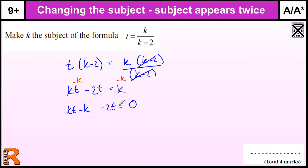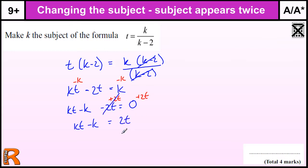And I'm going to add 2T to both sides — I'm doing it in two steps to make it clear. When I add 2T to this side, the minus 2T disappears, and I just end up with 2T on the other side. So I've moved the minus 2T to the other side by adding it.